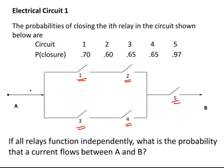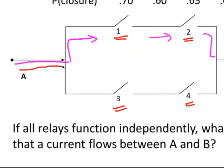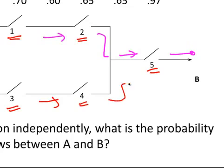If all the relay circuits function independently, what is the probability that a current flows between A and B? Let's consider this for a second. The current must flow either from A up through circuits 1 and 2 and then through circuit 5 until it gets to B. Otherwise, it can start at circuit A and then go through circuits 3 and 4 and then up through 5 that way.